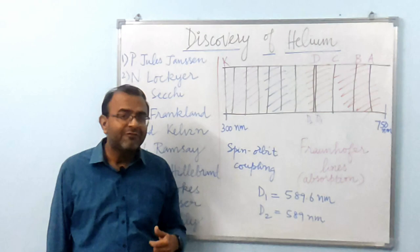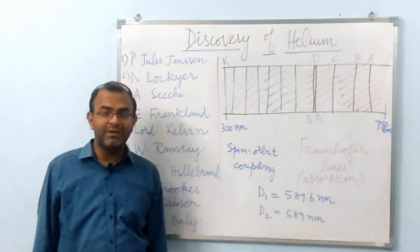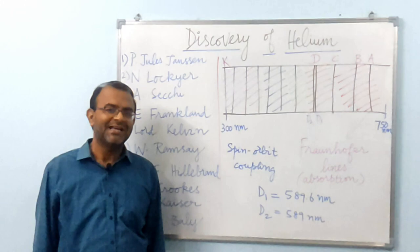It was Lord Kelvin, during his 1871 presidential address to the British Association, who suggested that this D3 line could be due to a new substance since Lockyer and Franklin's experiments could not prove that it belonged to any known element. Lockyer and Franklin preferred calling this new substance Helium after Helios, the Greek word for Sun.